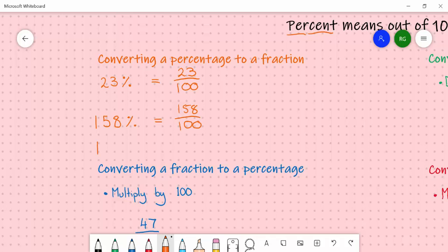If we had say 19.2%, the same principle would apply. 19.2 out of 100. Although you should know that we don't actually have decimals in a fraction. So what we can do is multiply the top and bottom both by 10 so that we get 192 out of 1000, both of which are the same number.